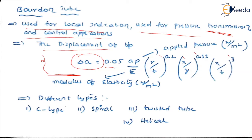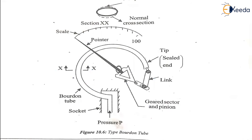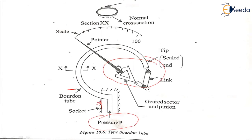You just need to remember the formula for the displacement of the tip for different types of bourdon tubes: C-type, spiral type, twisted type, helical type — various types are available. Now, how the bourdon tube works is very important. I am applying the pressure over here on this bourdon tube. There is a socket connecting the bourdon tube, and there is a rack and pinion arrangement.